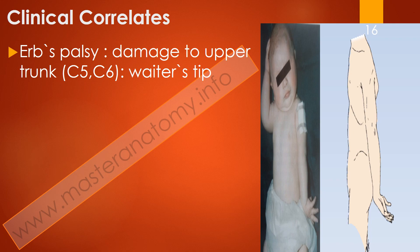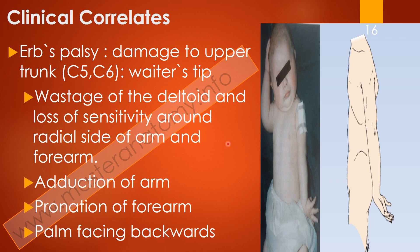Now for clinical correlates. One of the most important is Erb's palsy — traction or damage to the upper trunk, C5 and C6. It presents as 'waiter's tip,' where the arm is adducted, the forearm is pronated, and the fingers face backwards, like a waiter or security guard expecting a tip. This occurs because of extension of the angle between the head and neck, as in a fall on the shoulder, or sometimes during childbirth when that angle is hyperextended.